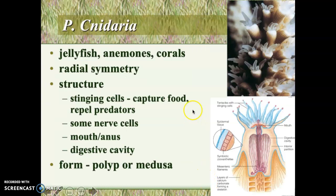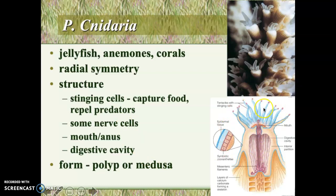The next phylum is Phylum Cnidaria, which includes the jellyfish, the anemones, and the corals. Cnidarians have radial symmetry — if you look from the top, it's symmetrical all around in a circular pattern. They have stinging cells that help them capture food. Their mouth and anus is exactly the same opening, so they capture food, bring it in, digest it, and spit out whatever remains — meaning they can really only have one meal at a time. If you flip one of these organisms over, you'll have a jellyfish, which is basically a free-floating example.